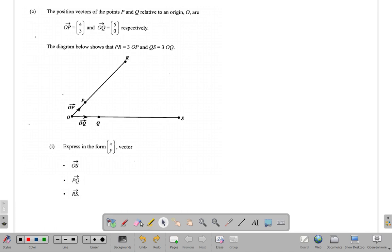OP equals 4, 3. From O to P is 4, 3. That means if you should go from O to P, you could go 4 to the right, 4 units to the right and 3 up. That's what it means. And OQ is 5, 0. From O to Q you go 5 to the right, but you neither go up nor down. Respectively, meaning in the same order in which they are mentioned.